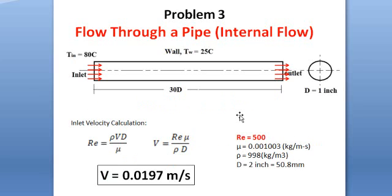In the problem definition we have the pipe diameter and the Reynolds number. From the definition of Reynolds number, if we put this value for water, we will get the velocity inside the tube is 0.0197 meters per second, and this velocity represents Reynolds number 500.